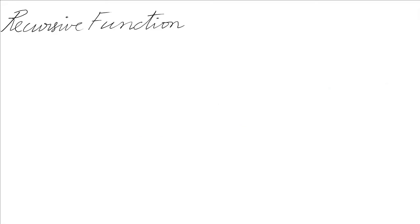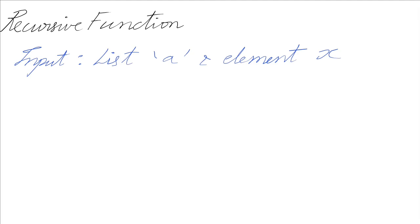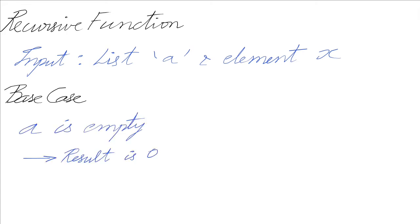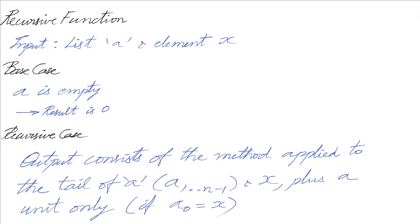So what does the recursive function look like? We provide an input list A and an element X that we check if it is a majority element. The base case is an empty list, in which case we return zero. The recursive case returns the result of the method applied to the tail of A — discarding the first element — plus one only if A[0] equals X. If that first element equals X, we count it as one, and the number of occurrences keeps accumulating.